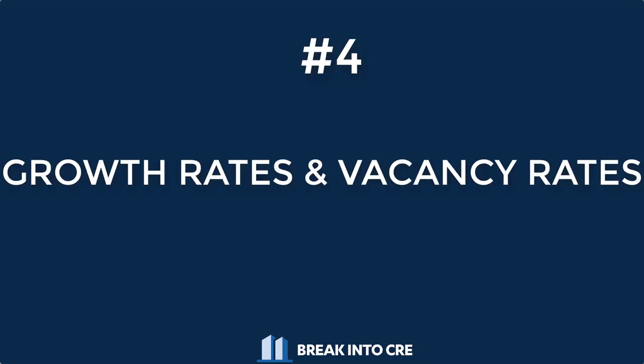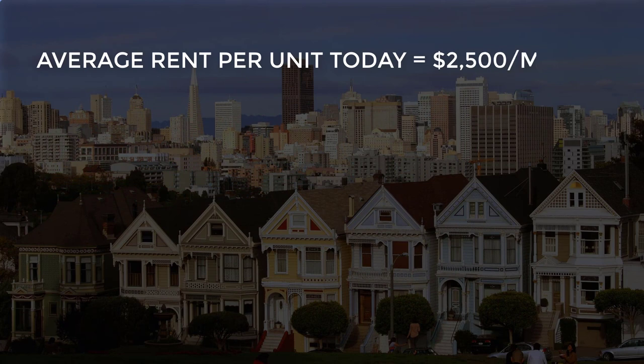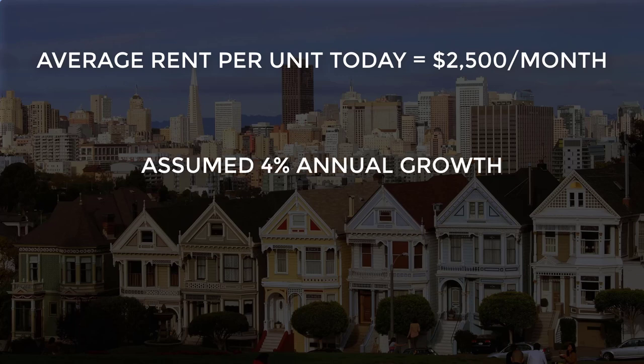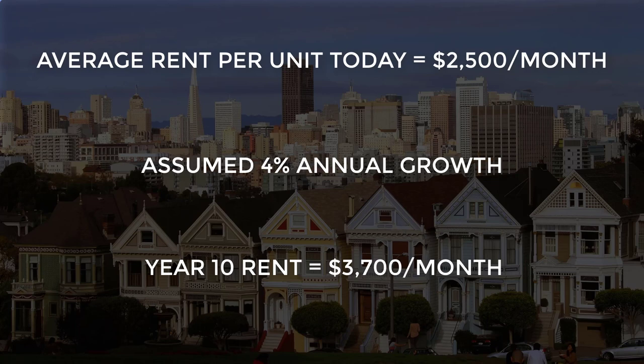Once you have your revenues, expenses, and construction expenses, the fourth thing you need to add is your assumptions for growth rates and vacancy rates. What do you think market rent growth is going to be over time? For example, if you buy an apartment building in San Francisco, California, where the average rent is $2,500 per month, five, seven, or ten years down the road that same unit may be renting for $3,000, $3,250, or $3,500 per month. You also need a vacancy rate assumption based on what you're seeing with comparable properties and how you plan to operate the property once you're the owner.